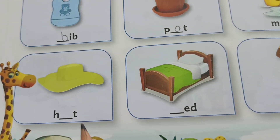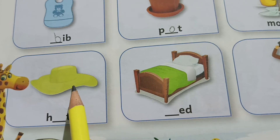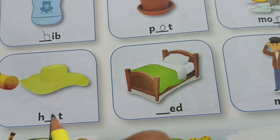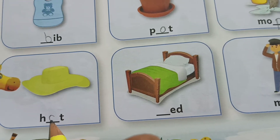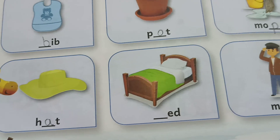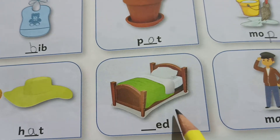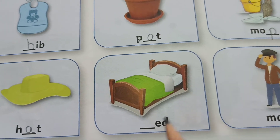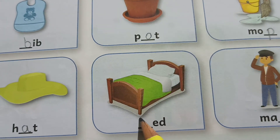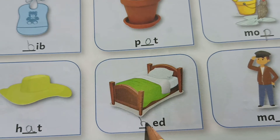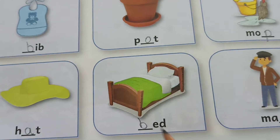What is it? Hat. H, a, t — hat. Now, this is a bed. B, e, d — bed.